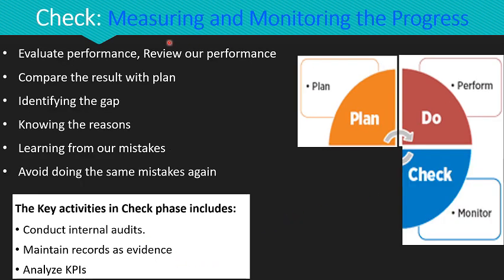The third stage of the PDCA cycle is Check — measuring and monitoring the progress. This is a very crucial stage because it allows us to evaluate the effectiveness of performance. By carefully examining our progress, we can determine whether our strategies are working as planned. This is where we review our performance: are we meeting our targets set in the planning stage? We compare our results with our predetermined plan to understand the gap between current performance and desired outcomes.